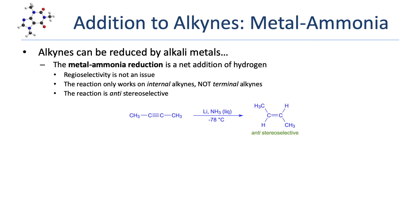Alkynes can also be reduced to alkenes using certain alkali metals. The metal-ammonia reduction is a net addition of hydrogen without the use of hydrogen gas. The reaction is anti-stereoselective, providing a complement to the syn-stereoselectivity observed in the Lindlar hydrogenation. It's important to note that the reaction only works with internal alkynes and not terminal alkynes. In this example, 2-butyne is reacted with lithium metal in liquid ammonia. The reaction is run at very low temperatures, often using dry ice, in order to keep the ammonia in liquid state.